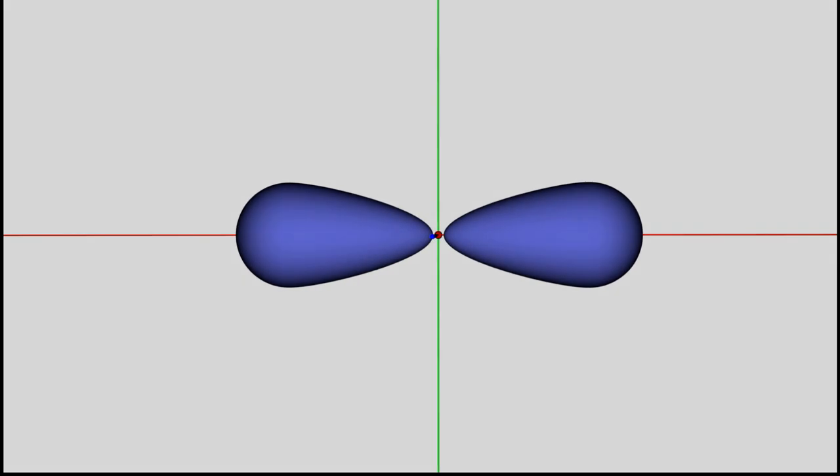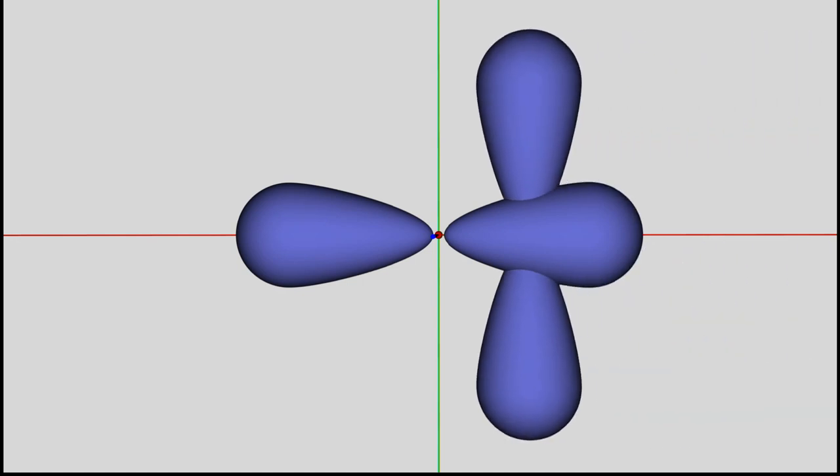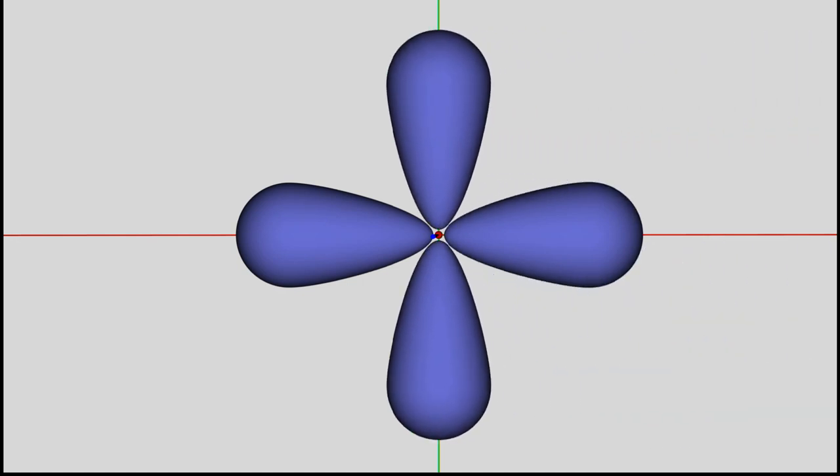The 2p orbital consists out of six drop shaped structures. There are always two of those drops arranged on one symmetry axis. One pair is arranged on the x axis and the other ones on the y and z axis.